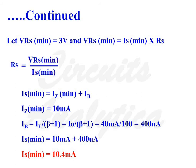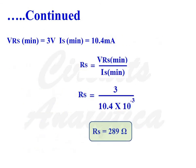IB equals IE divided by beta, equal to 0.4mA. Therefore IS minimum equals 10mA plus 0.4mA, giving IS minimum equal to 10.4mA. With VRS minimum equal to 3V and IS minimum equal to 10.4mA, the value of series resistance RS equals 289 Ohms.